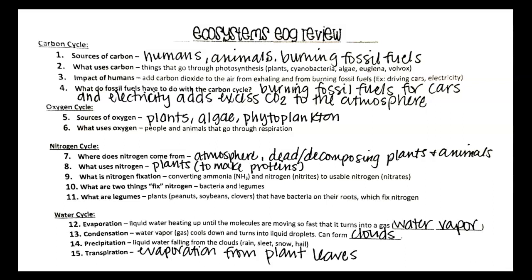Precipitation is water that's falling from the clouds, rain, sleet, snow, or hail. And transpiration is evaporation from plant leaves. So that water vapor, that gaseous water vapor is released from the stomata, those little holes on the underside of the leaves.